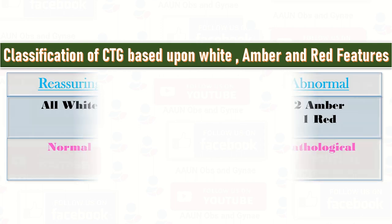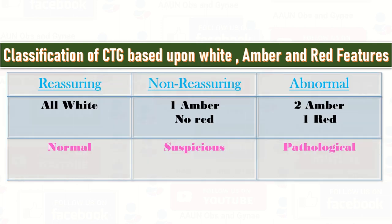To classify CTG based on white, amber and red features: a reassuring CTG has all white features — that is the normal CTG. A non-reassuring CTG has one amber and no red feature — that is suspicious. When we have two amber or one red feature, that is an abnormal or pathological CTG.